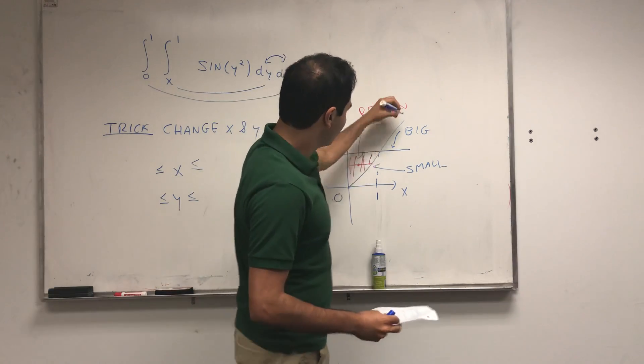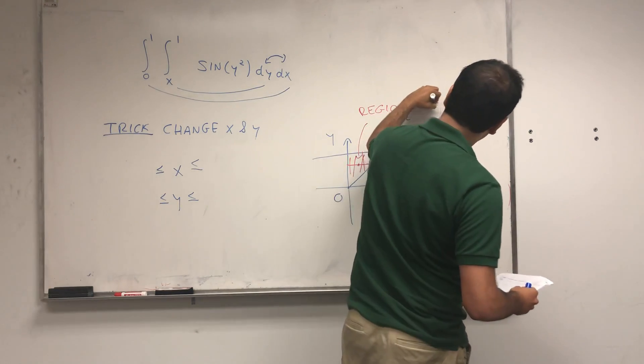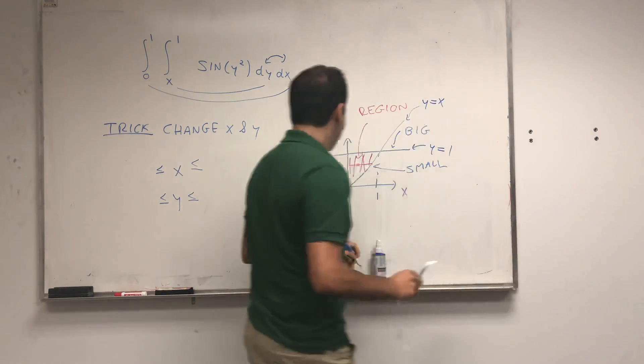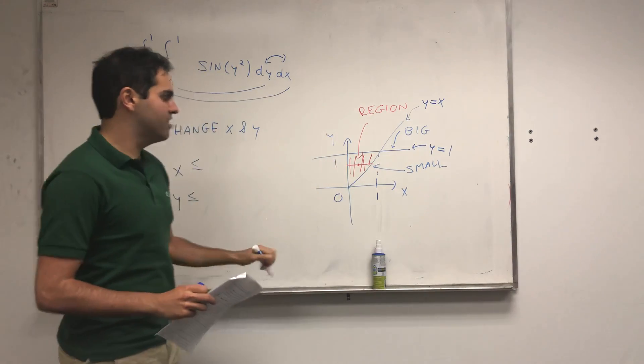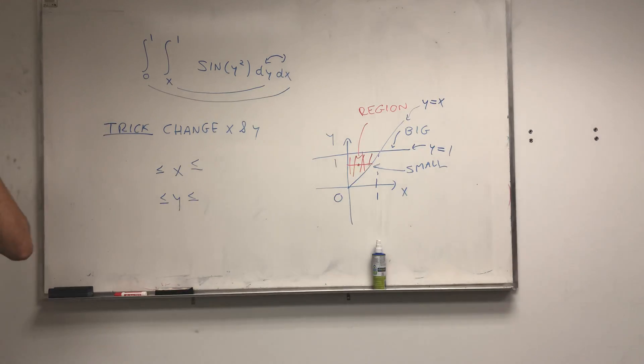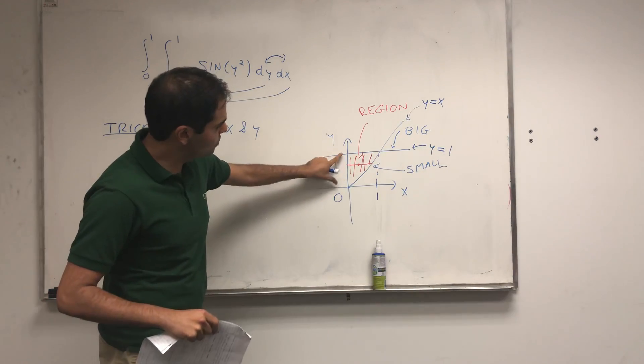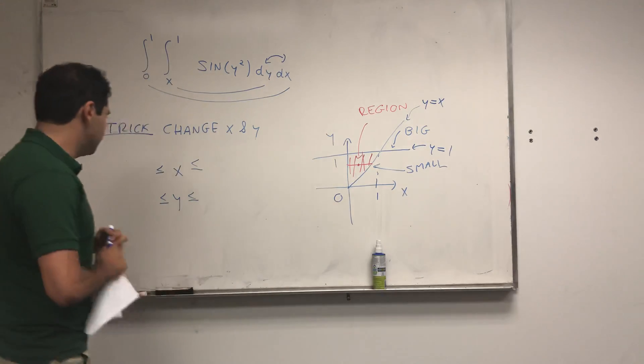And so, now look from this picture, what did we have? That was y equals to x, and that is y equals to 1. Let's first figure out the constants, where y is trapped between it. And so, in this case, you see that y is still between 0 and 1.